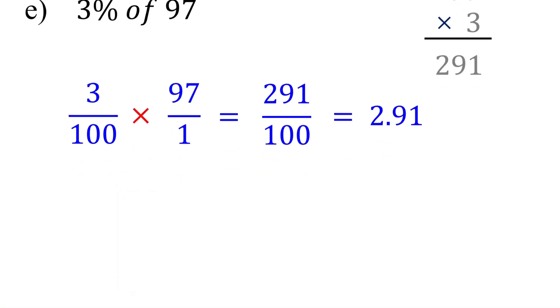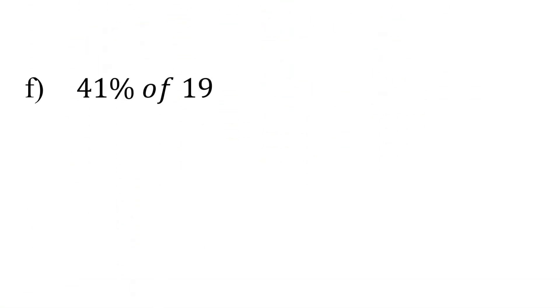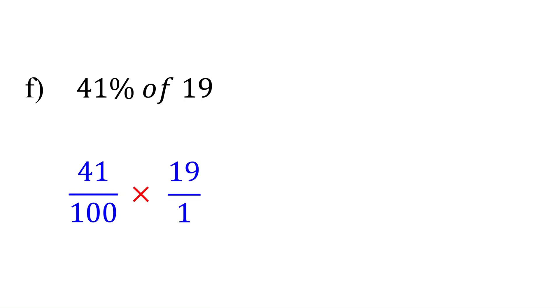Now try this one — it is the final example. What is 41% of 19? 41% means 41 over 100. Of implies multiplication. 19 is the same as 19 over 1. Both 41 and 19 do not have a common factor with 100. So we multiply across first.